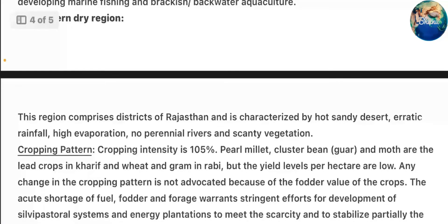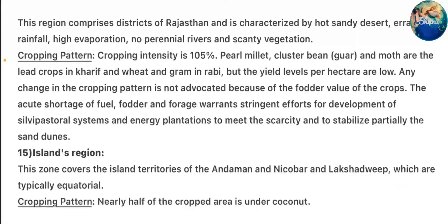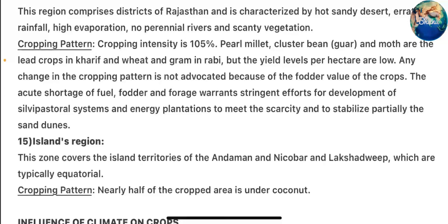Zone 14 – Western Dry Region: This region comprises districts of Rajasthan and is characterized by hot sandy desert, erratic rainfall, high evaporation, no perennial rivers, and scanty vegetation. Cropping pattern: cropping intensity is 105%. Pearl millet, cluster bean (guar), and moth are the lead crops in Kharif, and wheat and gram in Rabi, but yield levels per hectare are low. Any change in the cropping pattern is not advocated because of the fodder value of crops. The acute shortage of fuel, fodder, and forage warrants stringent efforts for development of silvipastoral systems and energy plantations to stabilize sand dunes.